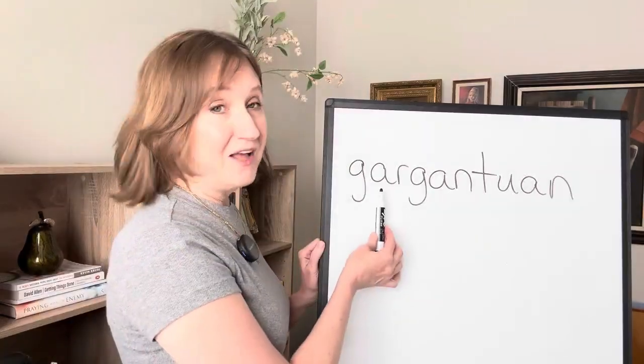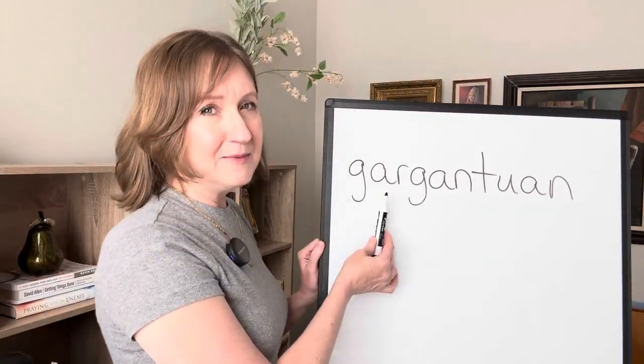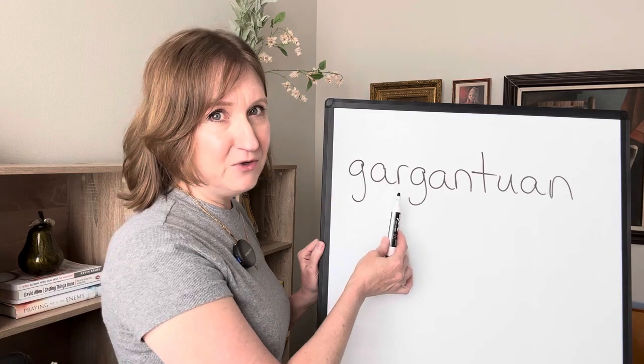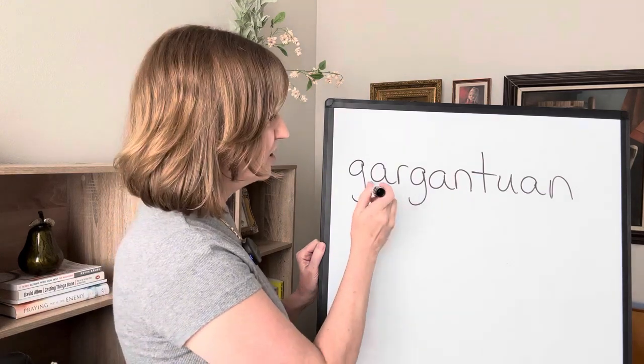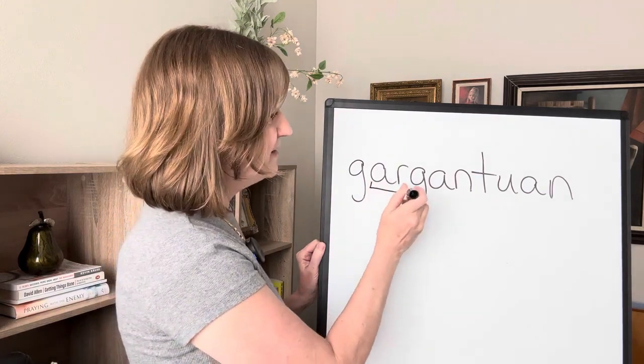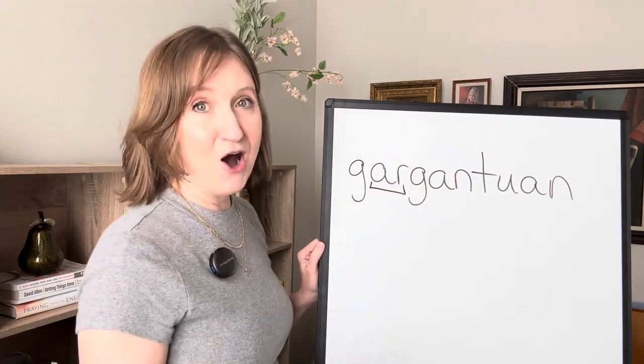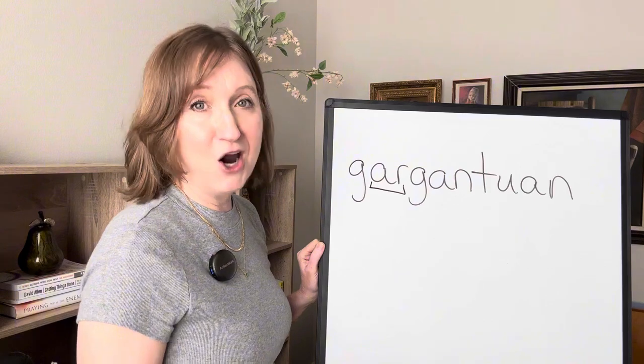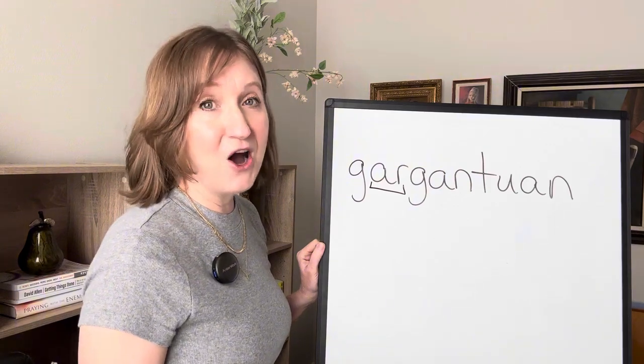This first vowel A has to be looked at as a unit with that R. A-R is a grapheme that says 'R' as in 'art' or 'car'.